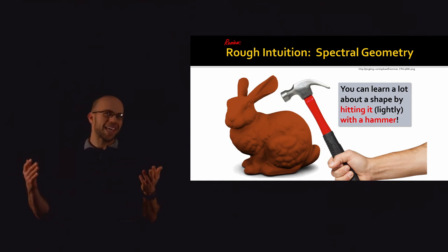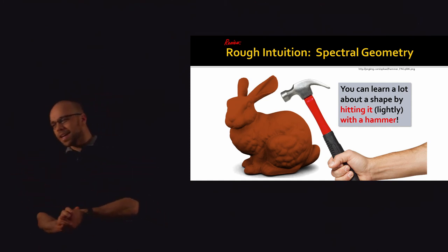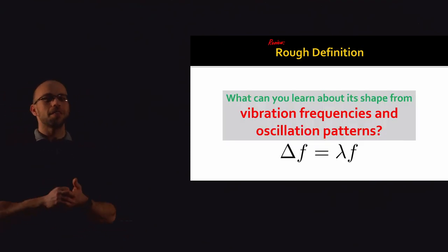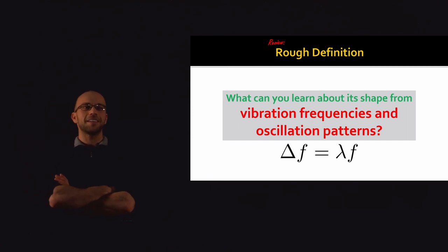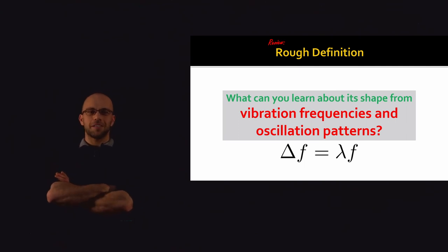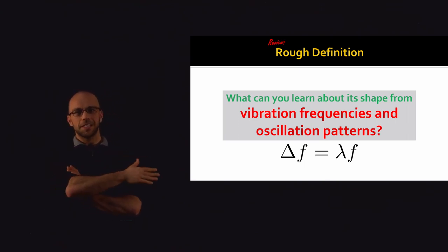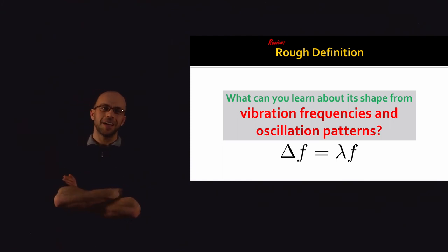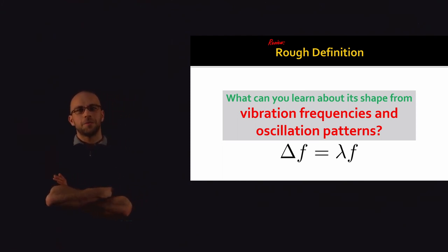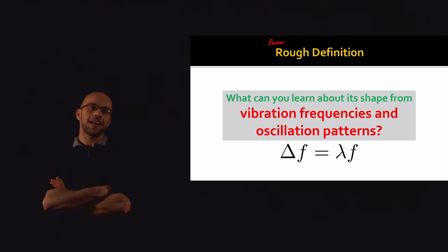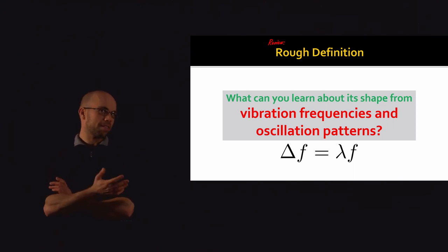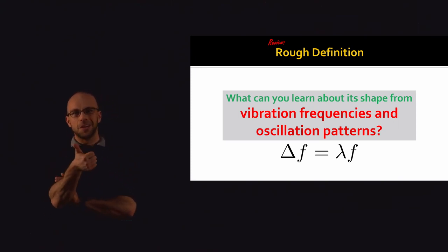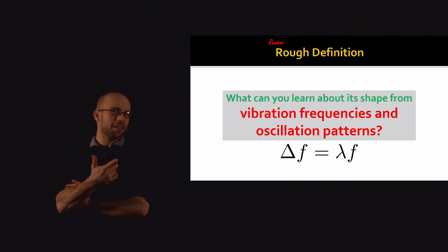While many of our motivations were built on two-dimensional manifolds like surfaces — including the bunny shown here — really the math works for higher dimensions equally well. There's nothing we did when motivating the Laplace operator that strongly depended on being intrinsically two-dimensional. So the same shape analysis constructions we can do on surfaces apply to high-dimensional circumstances as well. The disadvantage there is just that we can't draw a nice picture of it.